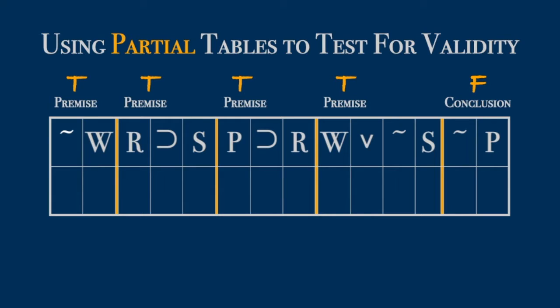Always start by making the conclusion false. In this case, that means assigning truth to P. First step done—we now have a false conclusion. To achieve that, we had to assign truth to P, so now assign truth to P anywhere else it shows up in the table. Now we try to make the premises true.